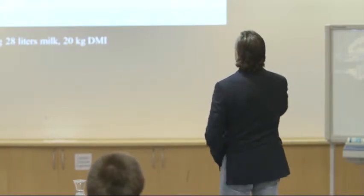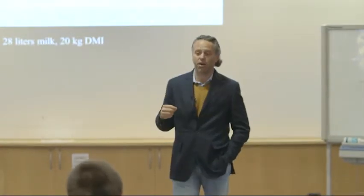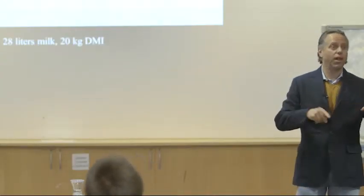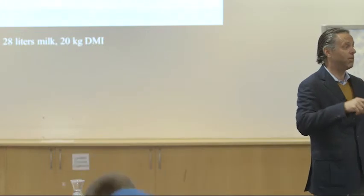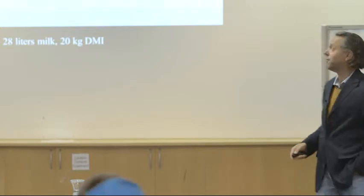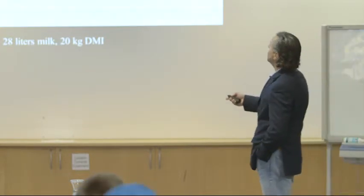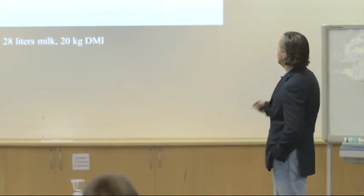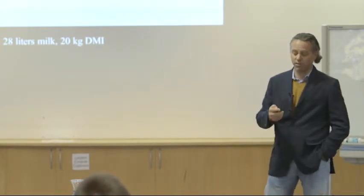This table looks at different ways to examine feed costs and the change in our markets over the last 10 years. In the old days we had cheap milk and cheap feed, and they scaled up over time — they moved together. But now they're sometimes moving independently, not necessarily in the same direction, which makes the margin concept absolutely critical. Let's look at several ratios of cow performance and then several margins and see the difference.